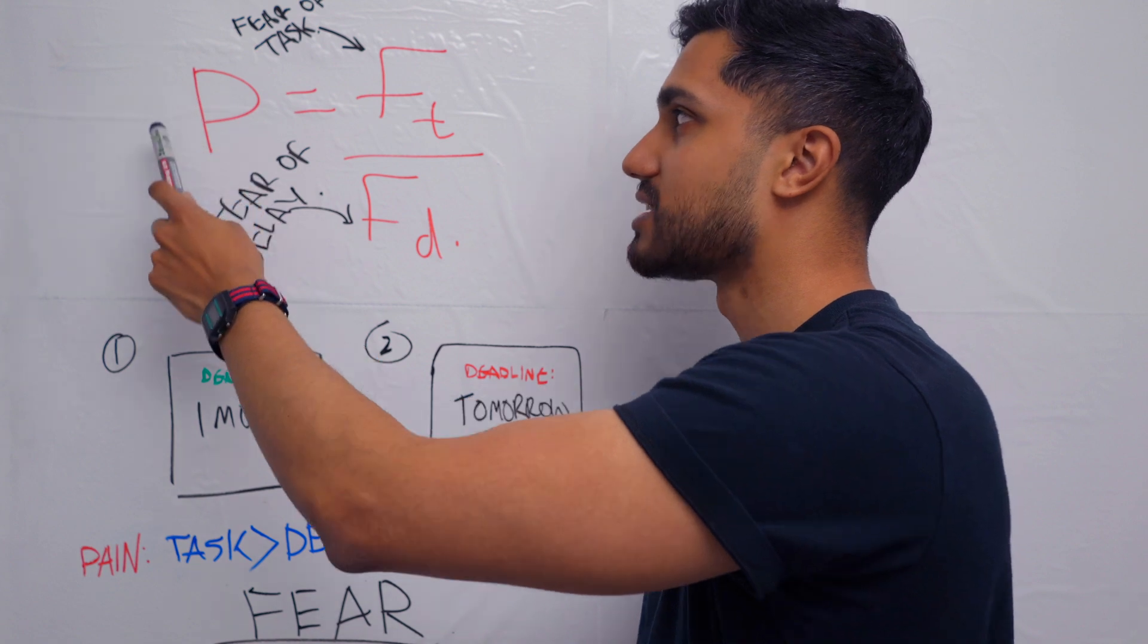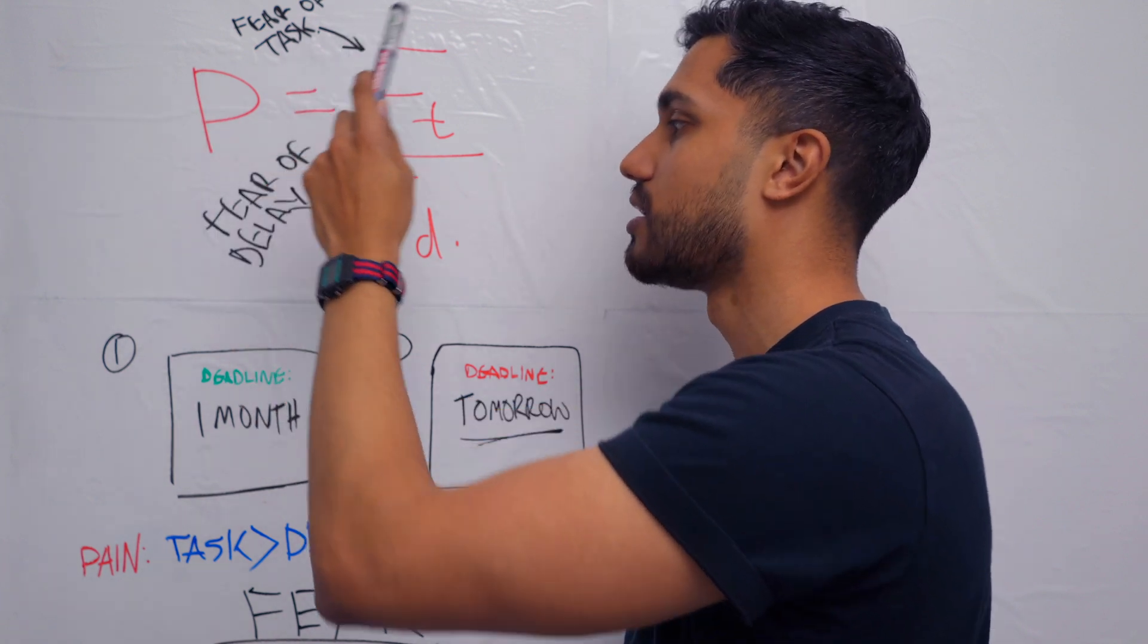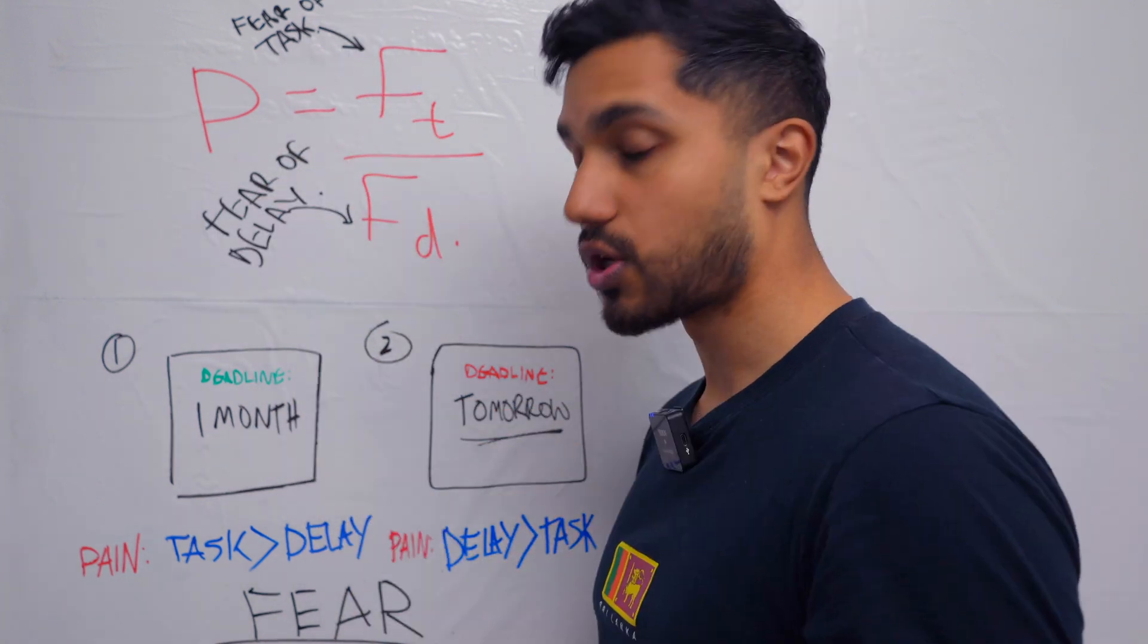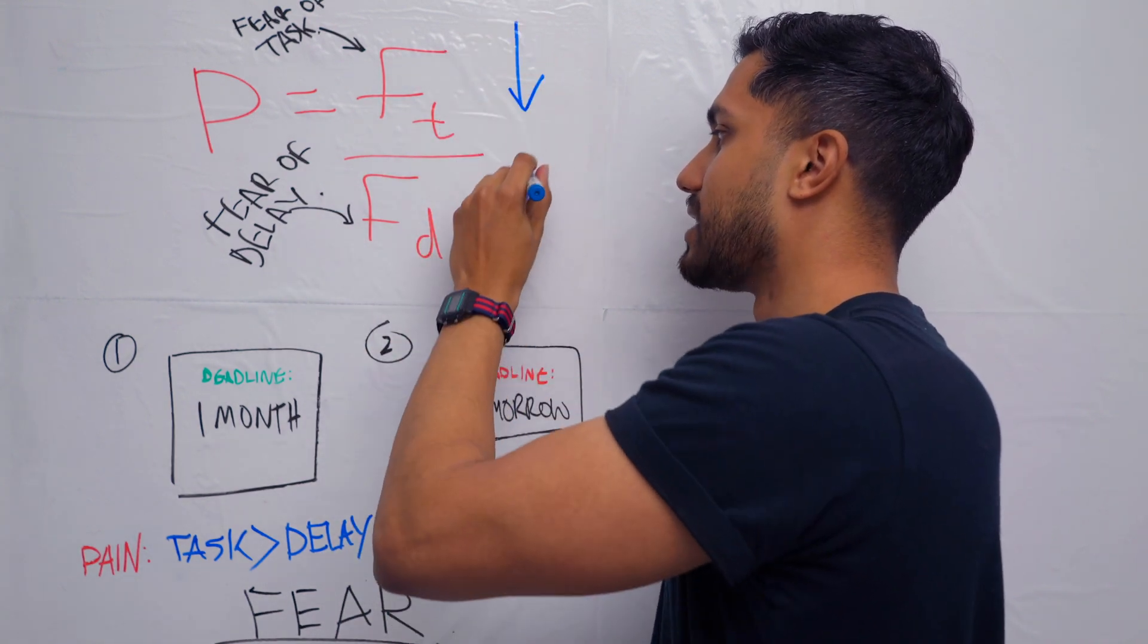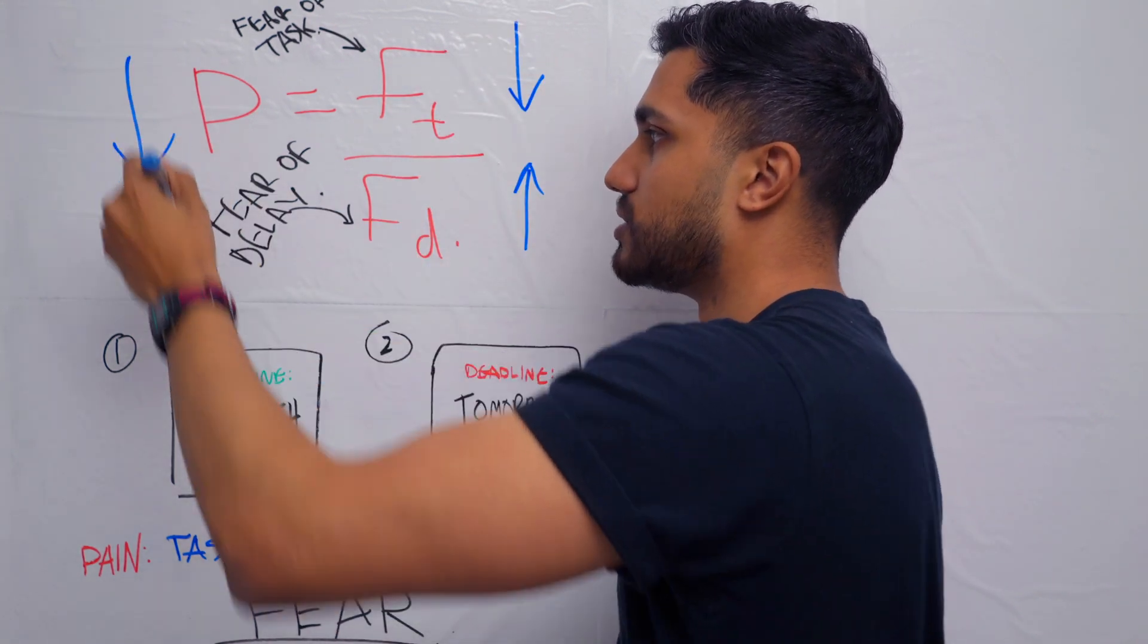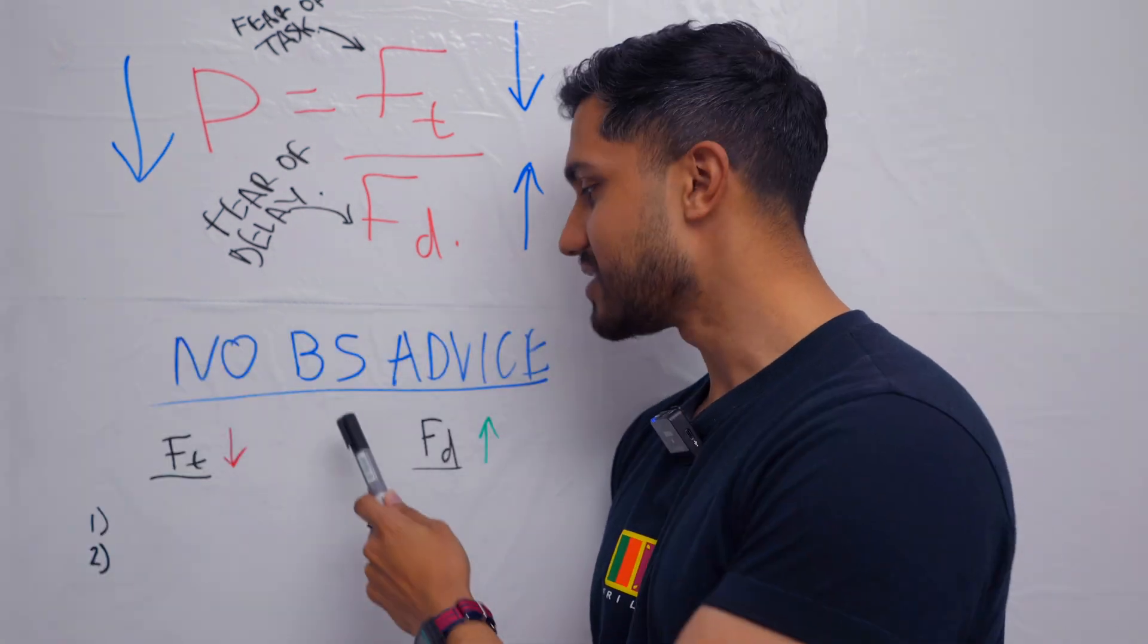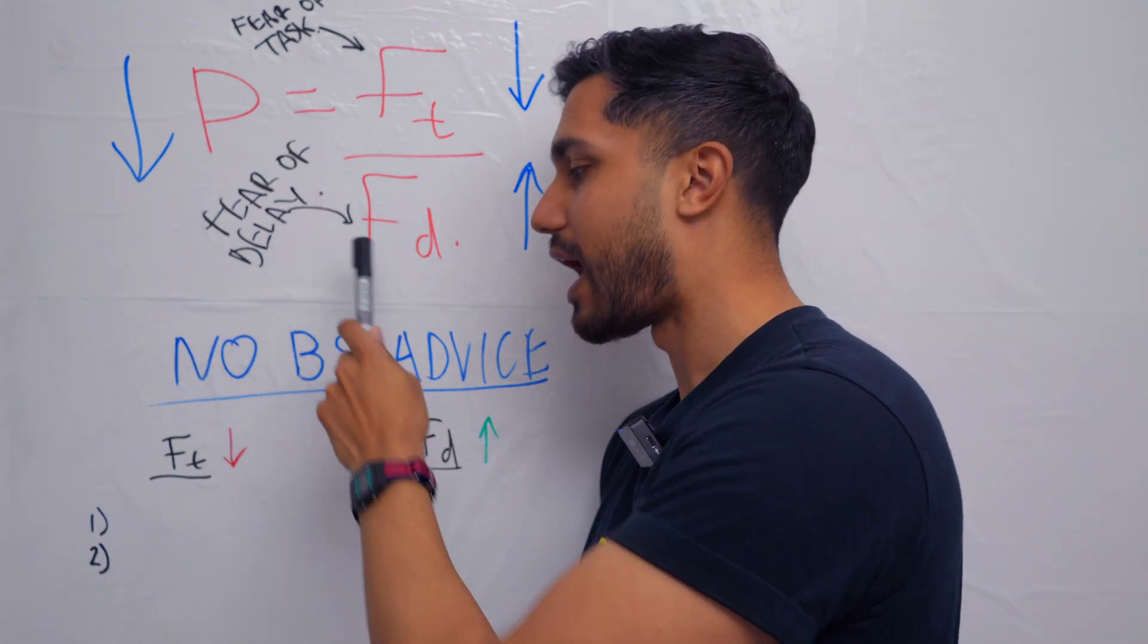So this is the formula. Procrastination equals fear of the task divided by the fear of the delay. So if you want to decrease your procrastination, you need to decrease this, and increase this, and then you decrease procrastination. Alright, so this is the no BS advice about how to use this.